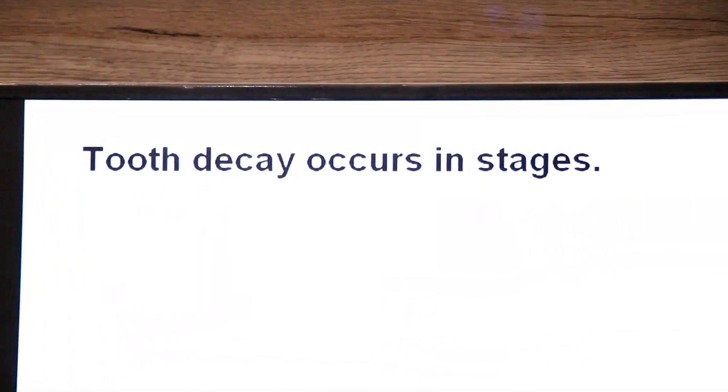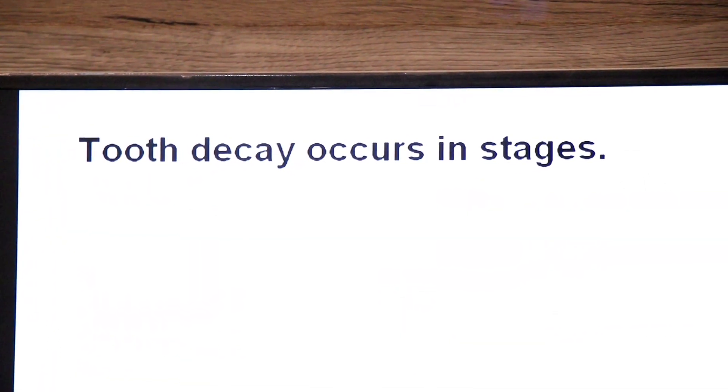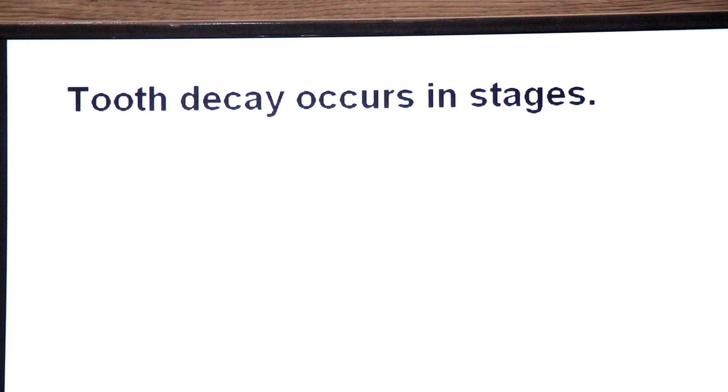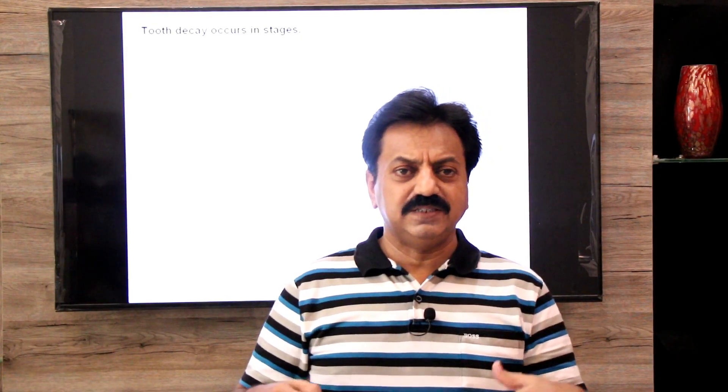Now tooth decay occurs in stages. Dear students, tooth decay ke dental caries ke usually five stages hote hain. Aur uske baad, jab final stage padhen ge — fifth — aur uspe bhi ignore kiya gaya, if left untreated, toh sixth stage aa jata hai: tooth loss. Ismein sixth stage tooth loss ka hoga, mager usse pehle treatment ke options hote hain. Toh hum one by one stage one se stage six tak padhenge.